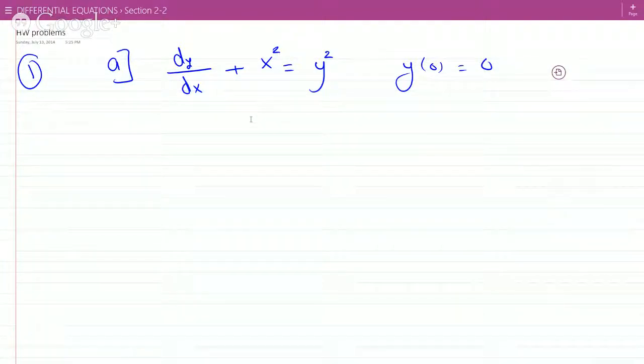And it's asking, does the existence and uniqueness theorem guarantee a unique solution to the following initial value problem on some interval? Explain.